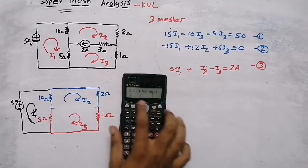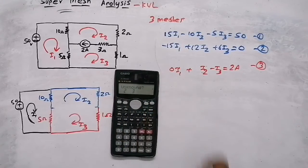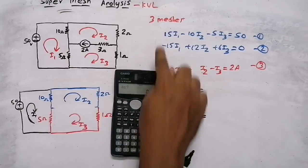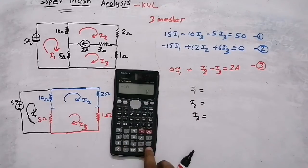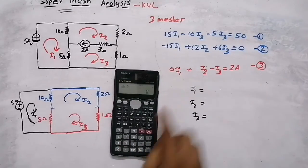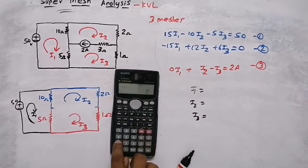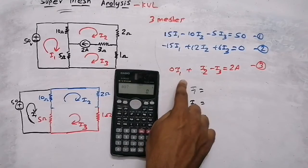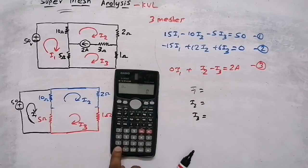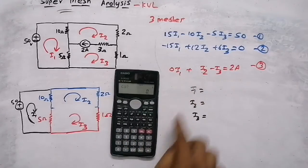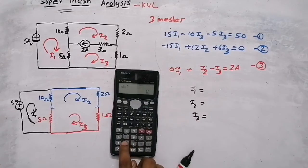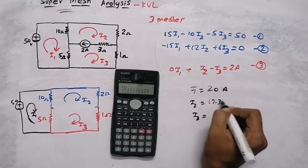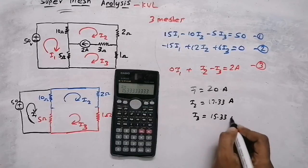Substituting these three equations into a calculator: equation one has coefficients 15, minus 10, minus 5 with constant 50; equation two has minus 15, 12, 6 with constant 0; equation three has 0, 1, minus 1 with constant 2. Solving gives i1 equals 20 amperes, i2 equals 17.33 amperes, and i3 equals 15.33 amperes.